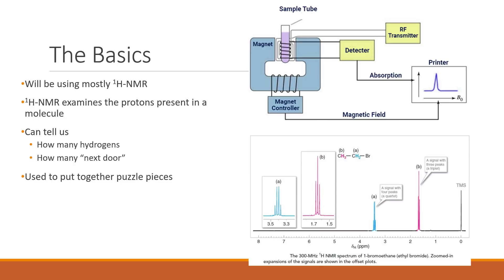For the most part we'll be dealing with hydrogen NMR in this course, which means we're going to be looking for where the hydrogens are within a molecule. Hydrogen is usually paired up with a carbon atom, and if we know the carbon structure we can indicate the skeletal structure. Hydrogens can also be present on heteroatoms such as nitrogen and oxygen.